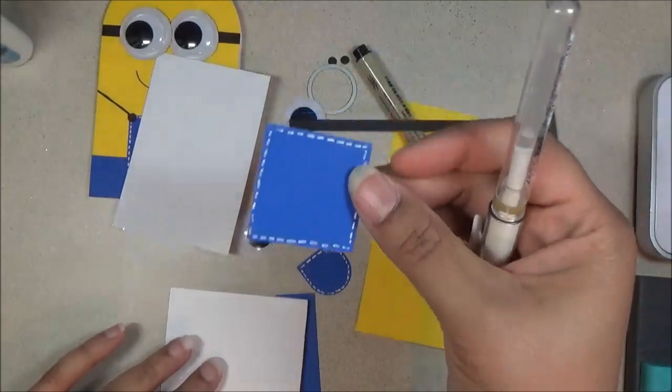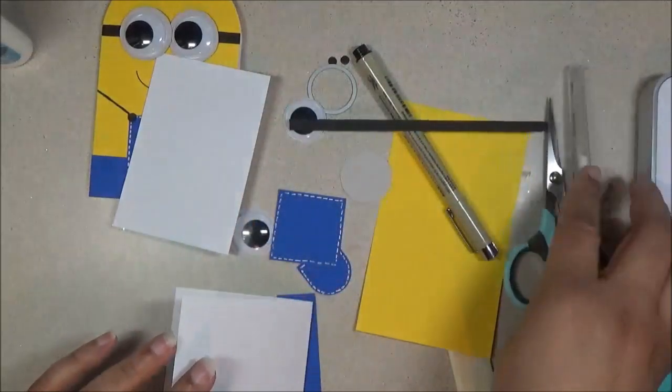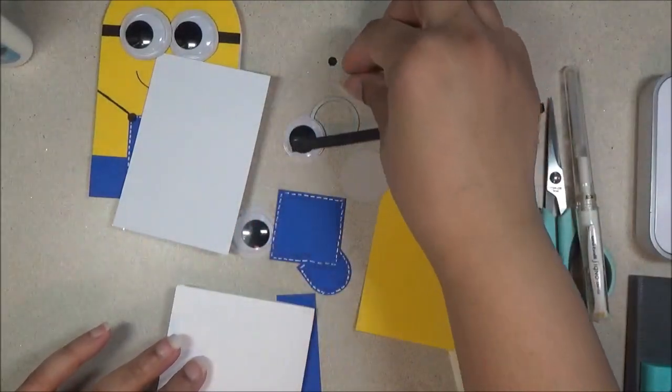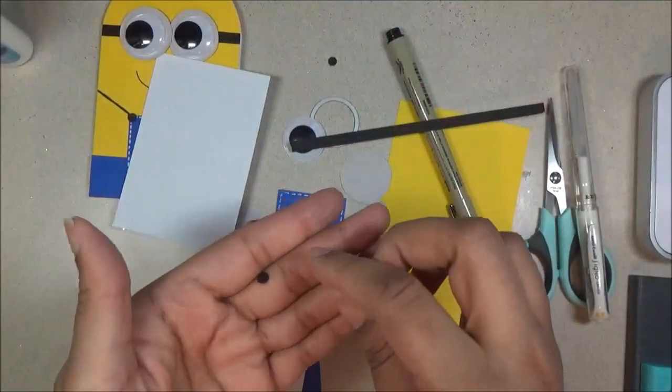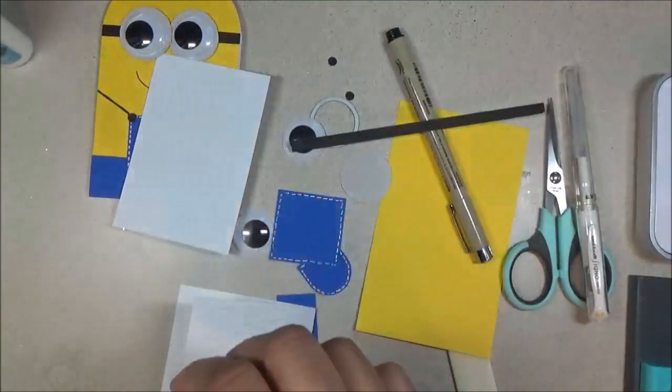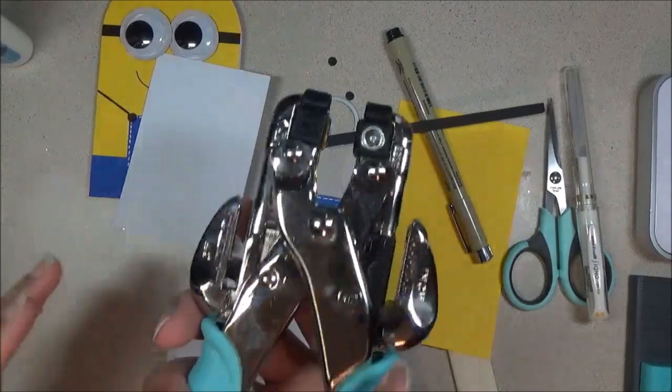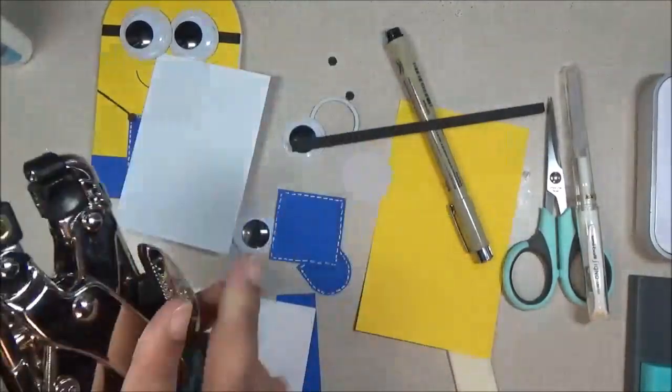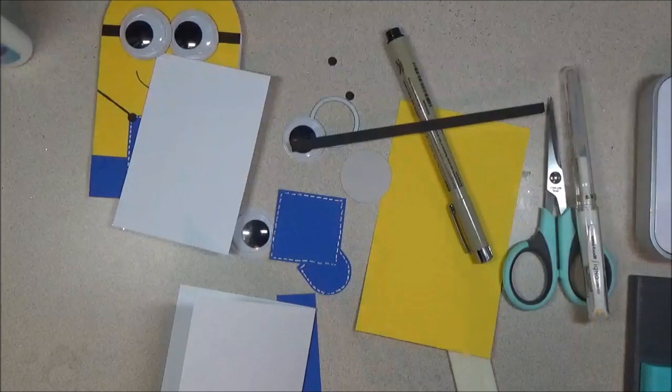And then the signal pen, I do faux stitching around the little square for his overalls. And I do have some little buttons here that I used to punch out and I got this from this little hole puncher, is the three sixteenths of an inch.